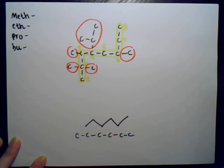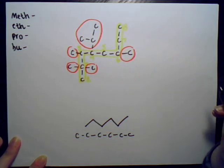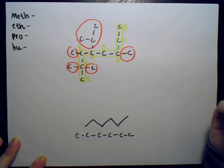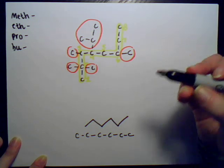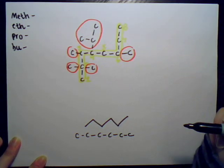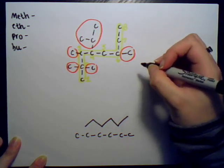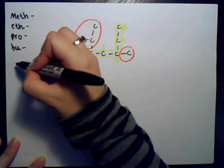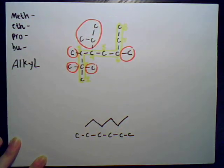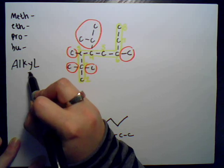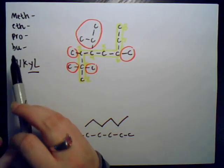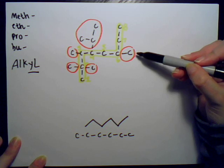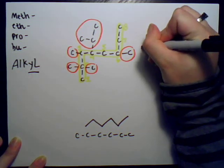We can use that same technique to name the substituents on these molecules that consist of just carbon. Just like the basic chain is called an alkane — so the name would be methane, ethane with that ending — these substituents consisting of just carbons and hydrogens are called alkyl groups. The ending -yl is attached to the prefix that tells us how many carbons there are.